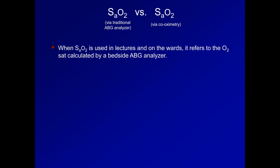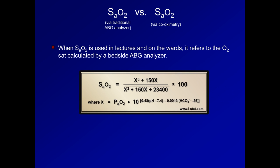This empirically derived calculation uses the PaO2, pH, bicarb, and occasionally temperature. In case anyone is tempted to actually attempt this calculation themselves, it's a bit of a doozy. Here is the specific calculation used by the popular i-STAT models of handheld ABG analyzers.